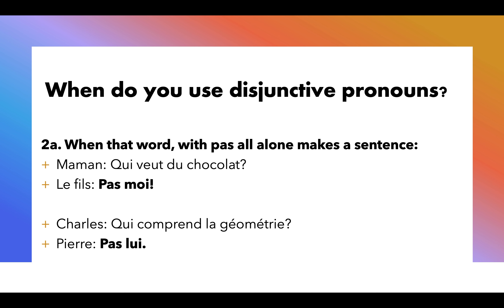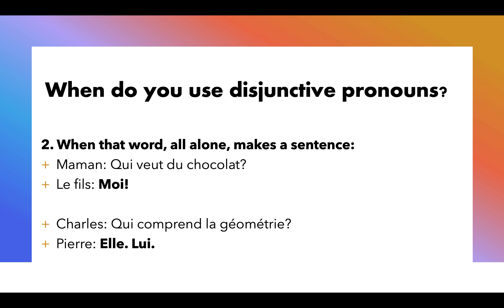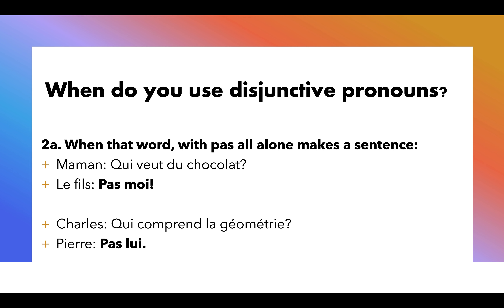The other time we use a disjunctive pronoun in a super short sentence is with the word pas — so, not. Let's look at those same sentences. Maman says qui veut du chocolat? And the fils could say, pas moi — not me, because he just ate a whole box of chocolate. Or, qui comprend la géométrie? Pas lui — not him.